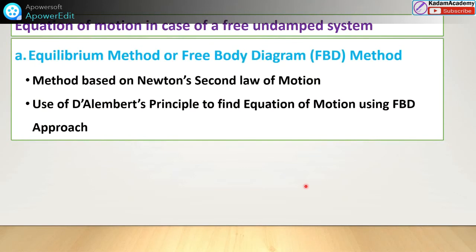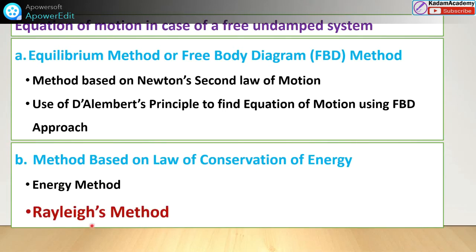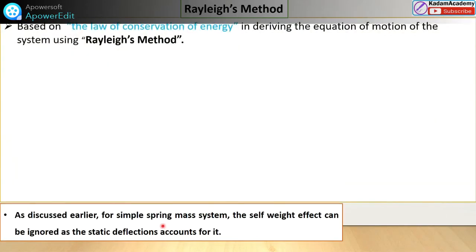The different methods include the equilibrium method or free body diagram, Newton's second law of motion, and D'Alembert's principle to find the equation of motion. Next is the method based on the law of conservation of energy — the energy method. This is the Rayleigh's method, which we are going to study in this lecture. The Rayleigh's method is based on the law of conservation of energy in deriving the equation of motion of the system.